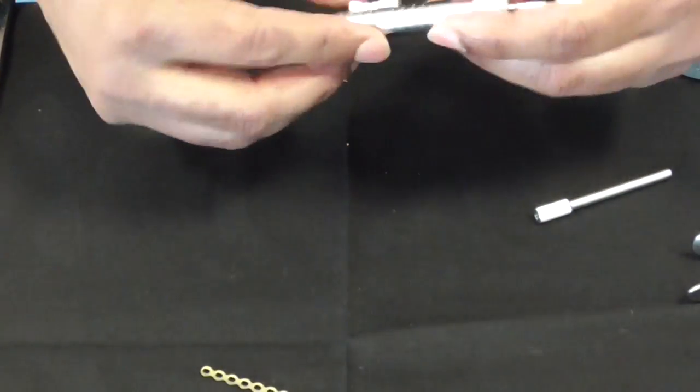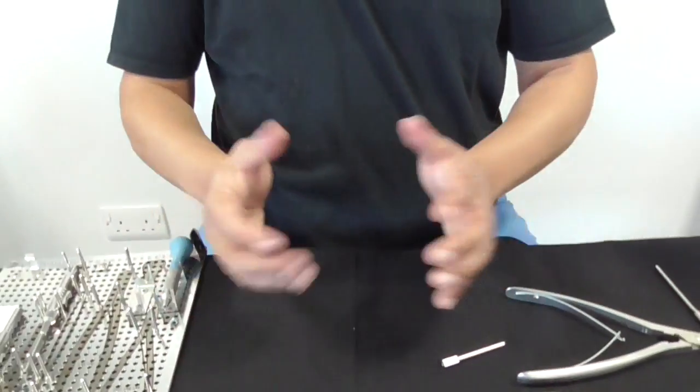That in essence is all the different bits of kit that you need for doing an open reduction internal fixation of hand fracture. Thank you very much.